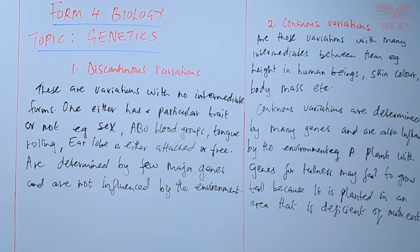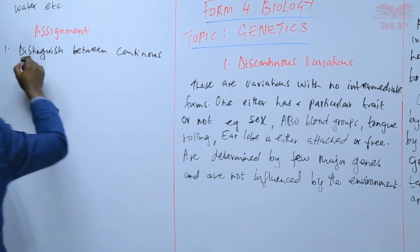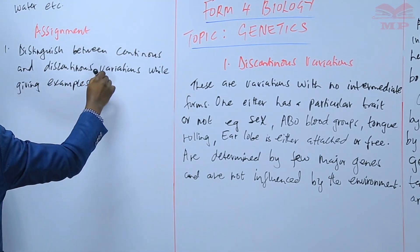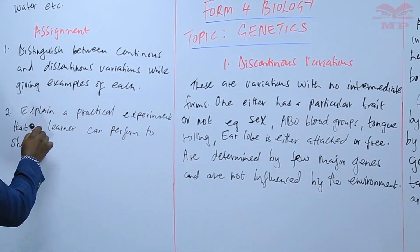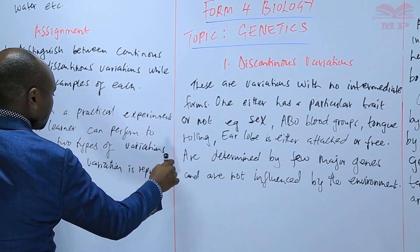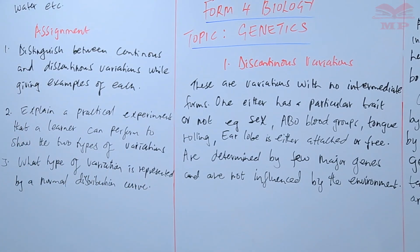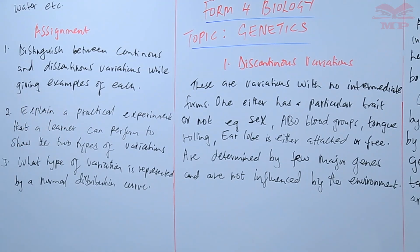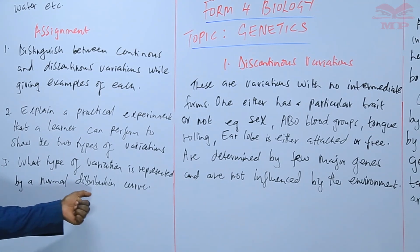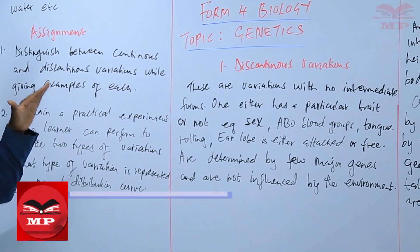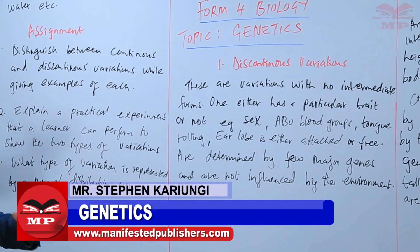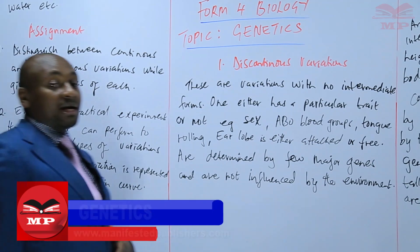We are going to have an assignment. Question one: distinguish between continuous and discontinuous variations, giving examples of each. Question two: explain practical experiments that a learner can perform to show the two types of variations. Question three: what type of variation is represented by a normal distribution curve — one that shows the distribution at lower, middle, and high levels? We will stop there. Until next time, goodbye.